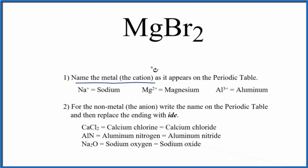We'll start by writing the name for the metal, that's the Mg, as it appears on the periodic table. So Mg, that's magnesium.